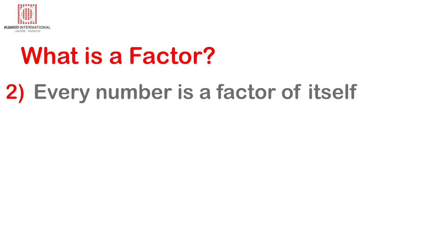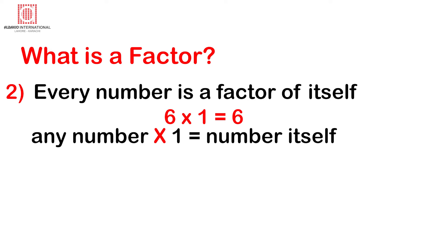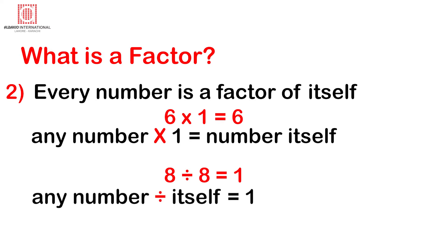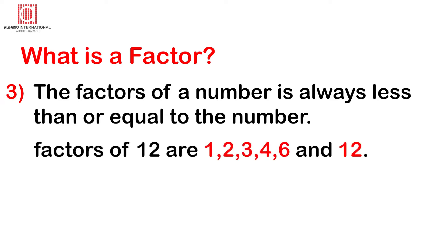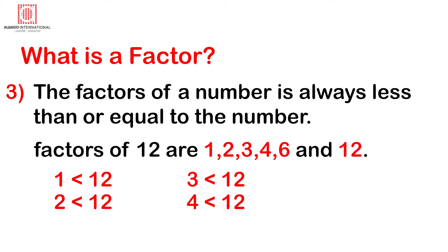Point 2 — every number is a factor of itself. We know that any number × 1 = the number itself, and any number divided by itself equals 1. Point 3 — the factor of a number is always less than or equal to the number. For example, the factors of 12 are 1, 2, 3, 4, 6, and 12. Each of 1, 2, 3, 4, and 6 is less than 12, and 12 equals 12.